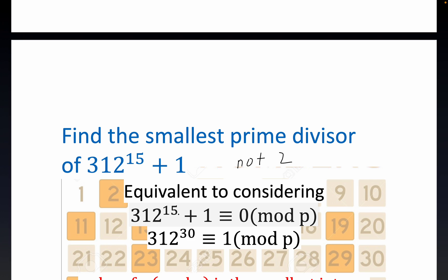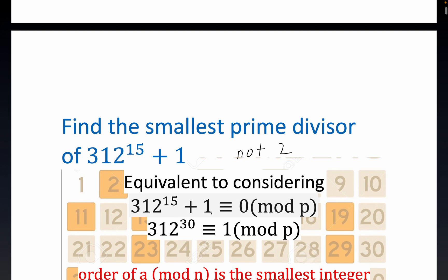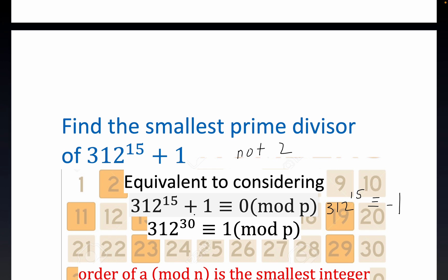One way to approach this is to consider the expression congruent to zero mod p — that's equivalent to saying p divides what we're interested in. Notice this statement is equivalent to 3 to the 1, and when you square it, you multiply the exponents. So 312 raised to the 30th power is congruent to 1 mod p, where p is currently unknown.